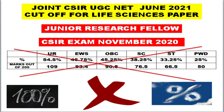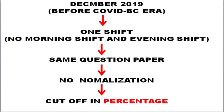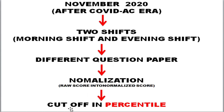For November 2020, the cutoff was not released in percentage wise manner. The reason is that December 2019 was in the pre-COVID era — the exam was conducted in one shift, so there was the same question paper for everyone. As a result, NTA did not incorporate normalization, and the cutoff was released in percentage.